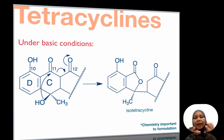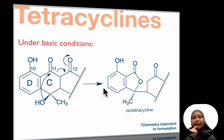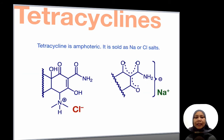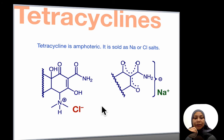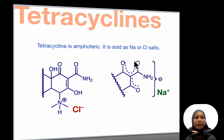The fourth chemistry occurs under basic conditions, where an OH group can attack intramolecularly on carbon 11 and cause the formation of isotetracycline, which is totally inactive. Tetracycline has an amphoteric nature, so it is usually sold as calcium or chloride salts. If the dimethylamino moiety is charged, it is sold as a chloride salt; if the ring A moiety is negatively charged, it can be sold as a sodium salt.